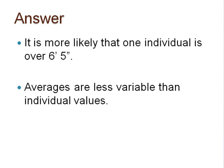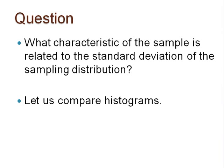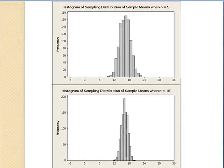Consider the next question: what characteristic of the sample do you think is related to the standard deviation of the sampling distribution of the sample mean? Pause here to think about this before continuing. To visualize this relationship, I simulated another 1,000 samples from my population of 100,000 values, but this time I increased the sample size of each sample to 15. Compare the histogram of means of samples of size 15 with the histogram of means of samples of size 5. What do you see?